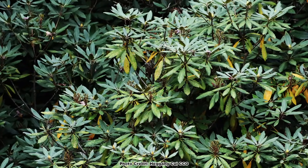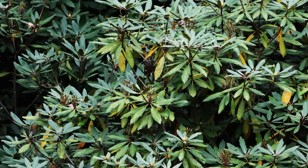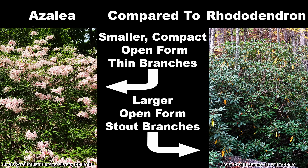Let's start with the general growth form of the shrubs. In general, the native azaleas are smaller, more compact shrubs with an open form and fine branches. Rhododendrons, on average, will be larger, with an open growth form and larger, stout branches.